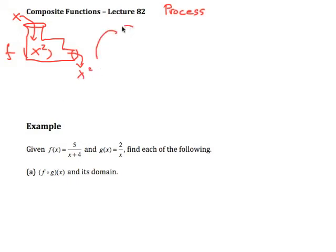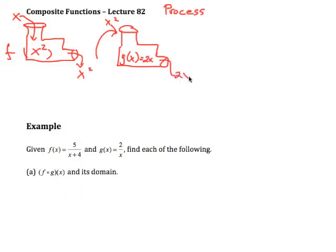Let's suppose we then take this x squared and put it into another machine. So we put our x squared in, and this function has to do with doubling it. Then what would come out is 2x squared. So we have this first function which squares it, and then this second process doubles it — we take x squared, put it in, and get 2x squared.